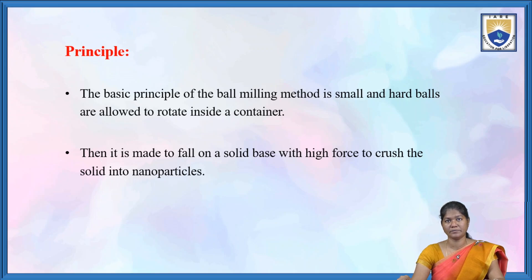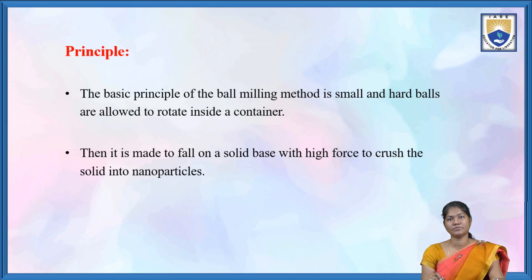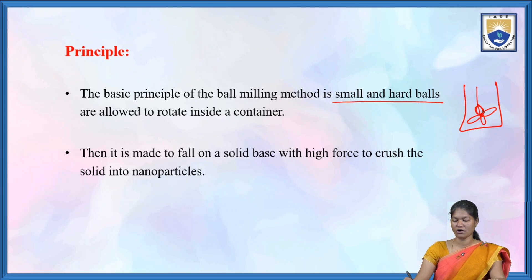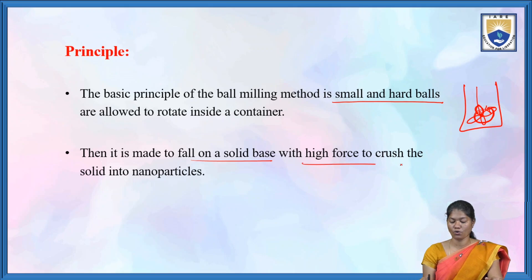This figure is used to explain the ball milling concept. Here there is a container with a lid, and inside the container we have tungsten and some powdered particles. The basic principle of the ball milling method is: small and hard balls are allowed to rotate inside a container. It is made to fall on a solid base with a high force to crush the solid into nanoparticles.